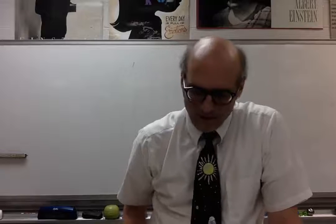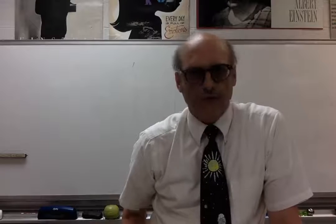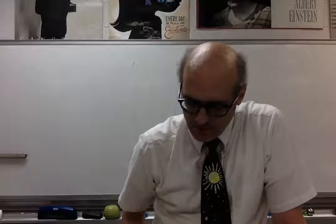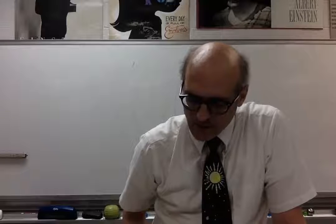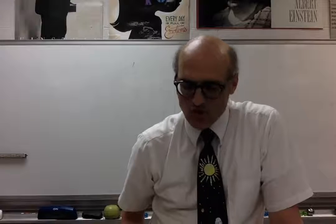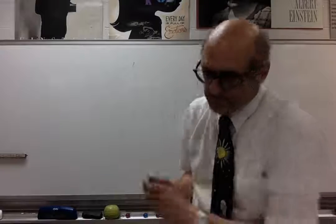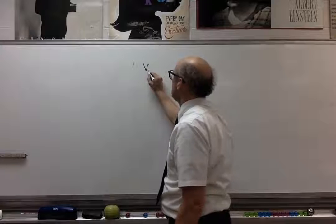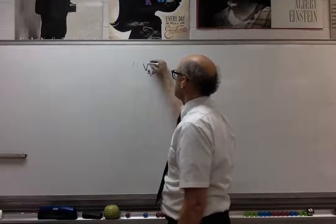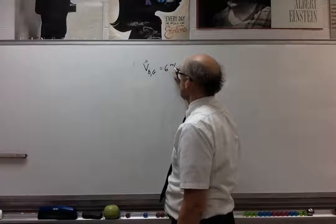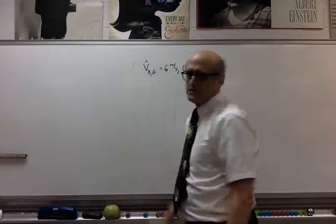Chapter 3, problem number 53. You are in a hot air balloon that relative to the ground has a velocity of 6 meters per second in the direction due east. So the velocity of the balloon relative to the ground is 6 meters per second due east.